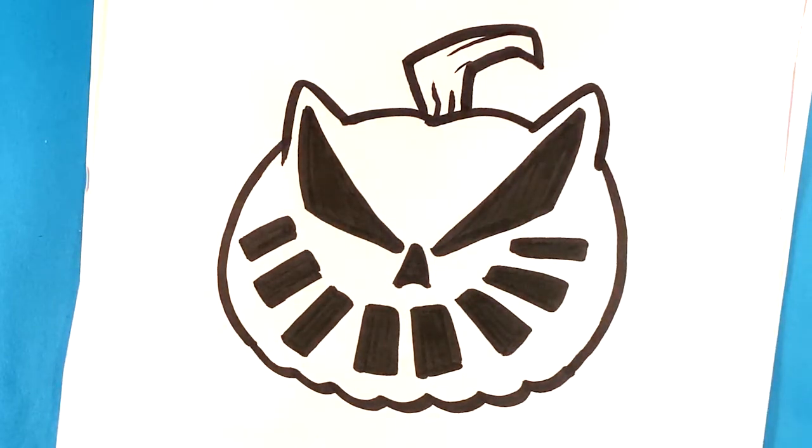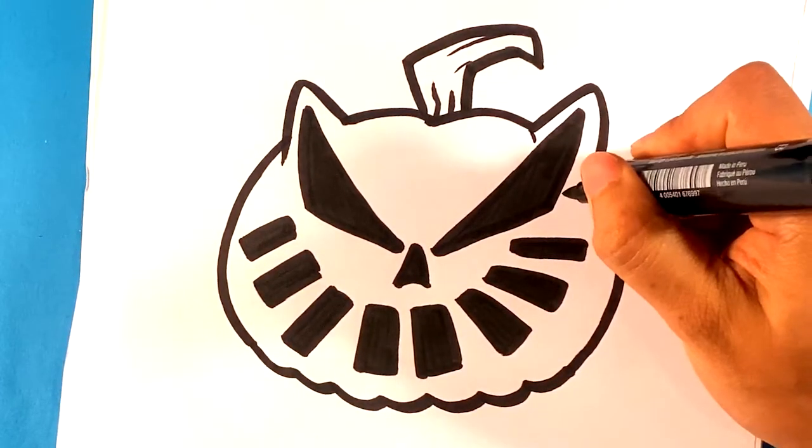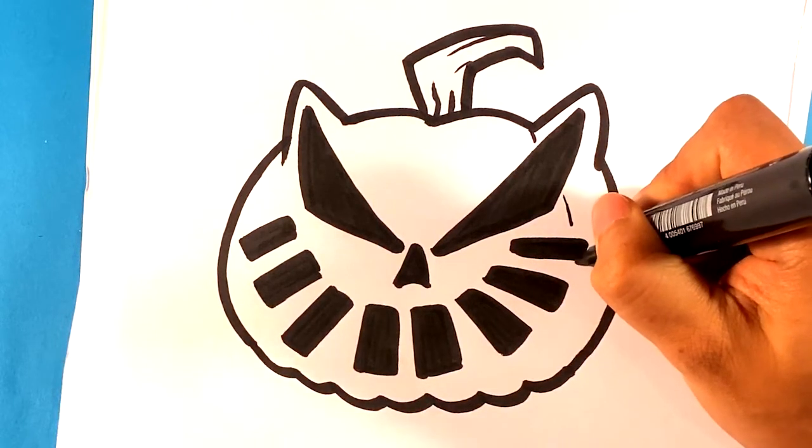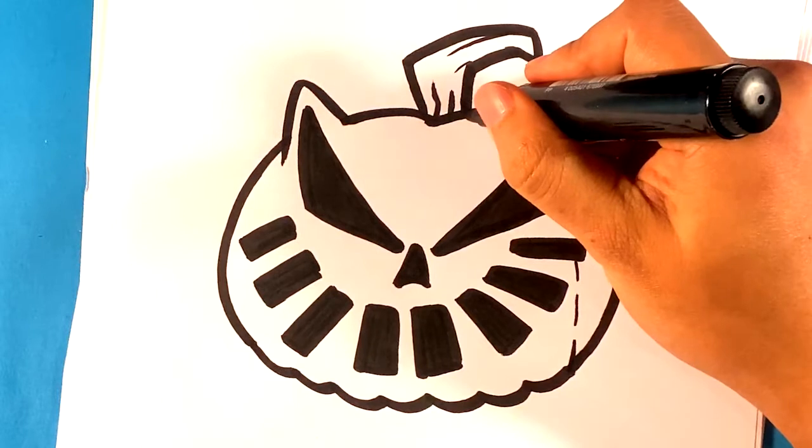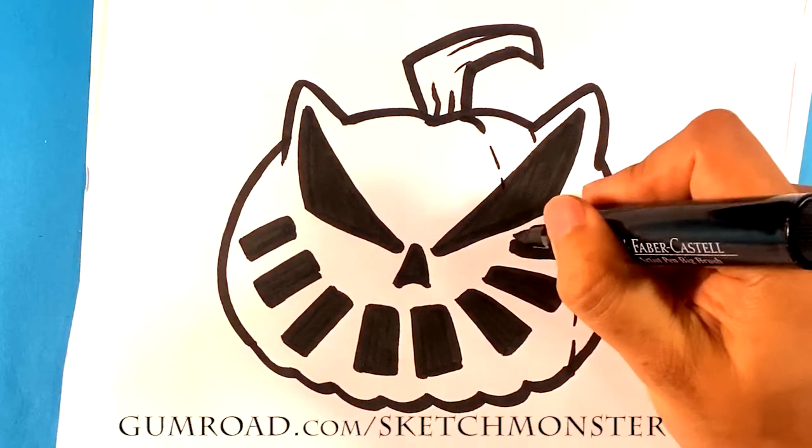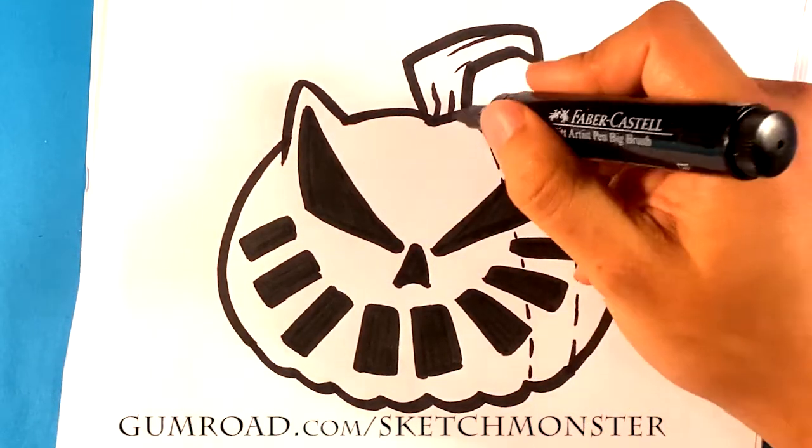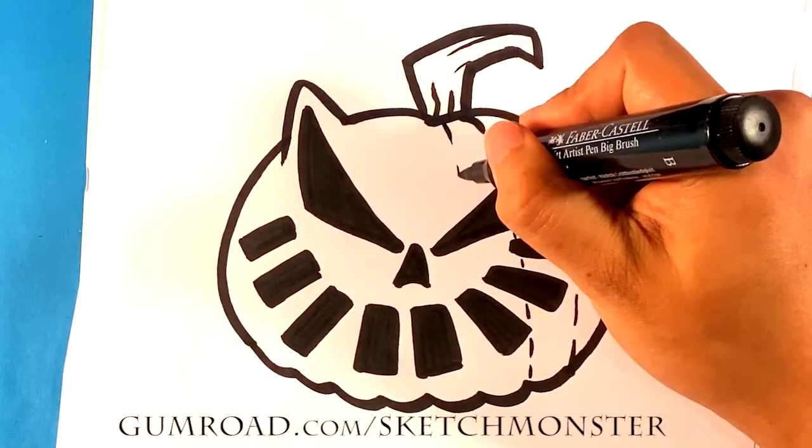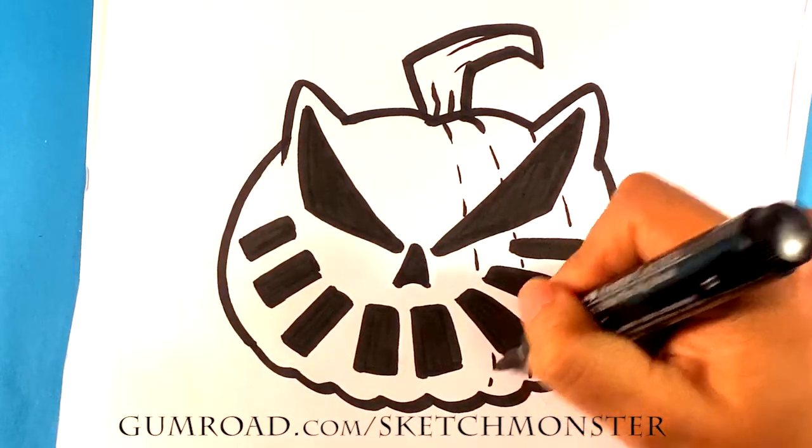And then now what I want to do is I want to show that this is a pumpkin. So I'm going to throw very thin lines and I'm not even going to connect them very much. They're going to be like large dotted lines across the pumpkin itself, and that's going to show that there is some sort of shape but it's not going to completely overcome it.